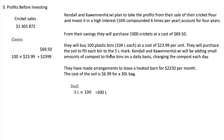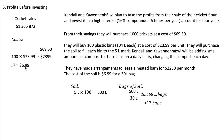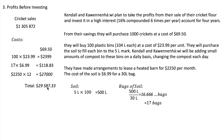A 30-liter bag of soil costs $6.99. We need 500 liters, so 500 divided by 30 gives 16.6 repeating — since you can't buy a fraction of a bag, we need to buy 17 bags. That's 17 bags at $6.99 each, totaling $118.83. The barn rental is $2,250 per month times 12 months, which is $27,000. Adding all costs together gives total costs of $29,587.33.